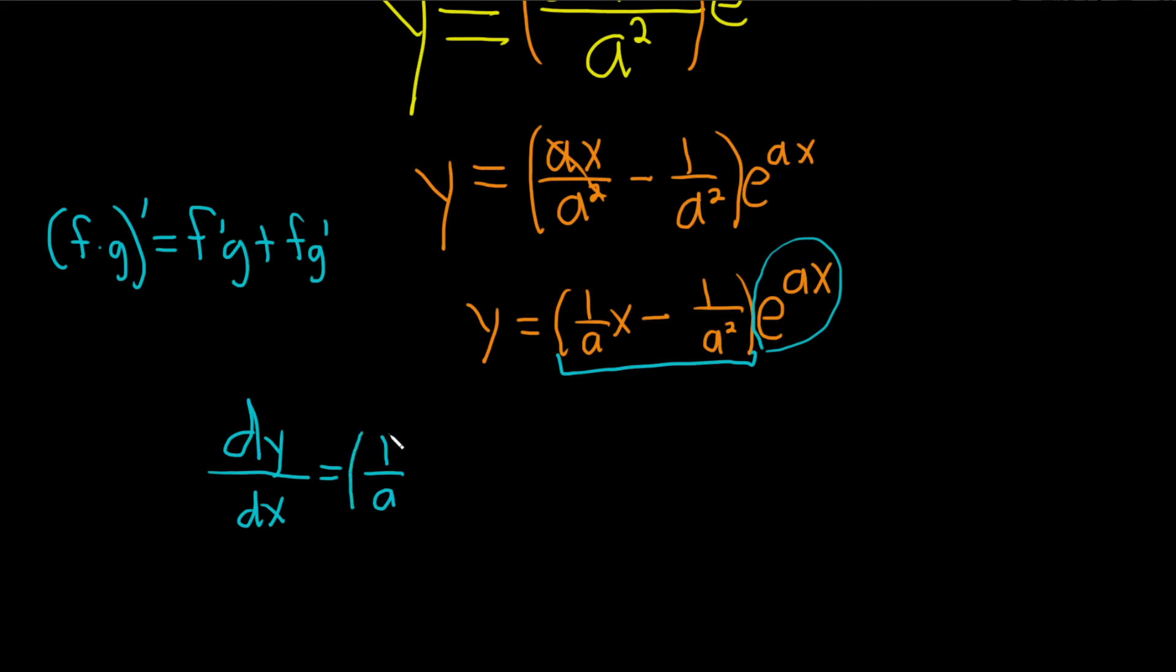So this is the derivative of the first times the second plus the first. So 1 over a x. That's just the first. No derivative. Minus 1 over a squared times the derivative of e to the a x.